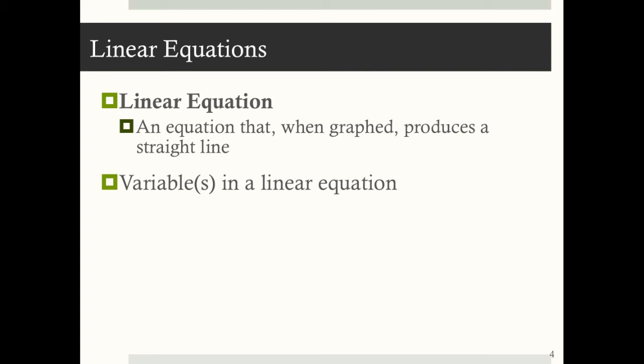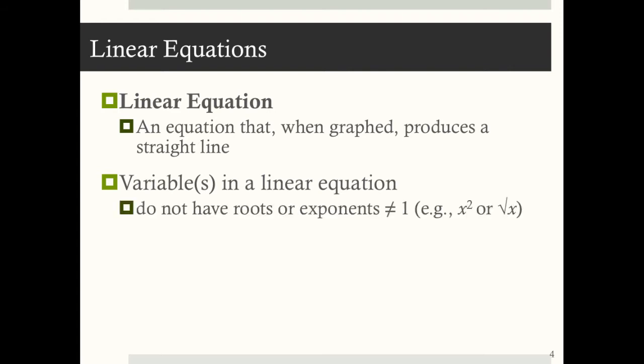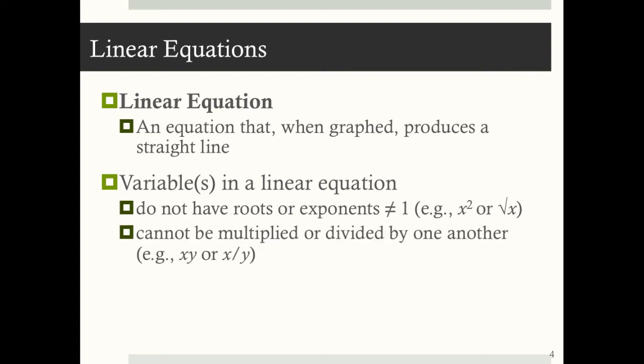Variables in a linear equation do not have roots or exponents not equal to 1. For example, you can't have a linear equation with x squared or the square root of x. If you have an equation with multiple variables, x and y, these variables cannot be multiplied or divided by one another. For example, an equation with x times y or x divided by y is not linear.